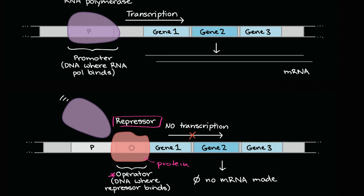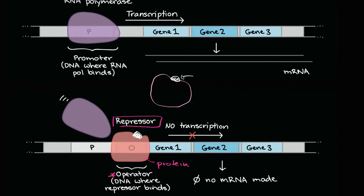You might even have extra mechanisms - you can think of them as ways to sense the environment - where the repressor protein can only do its job if it has other molecules attached to it. Those smaller molecules are called co-repressors. We'll go into more detail when we talk about the trp operon, where tryptophan, an amino acid, can actually act as a co-repressor.